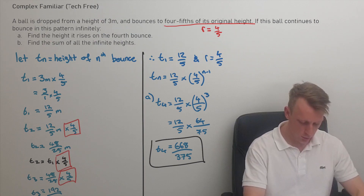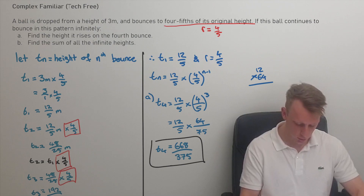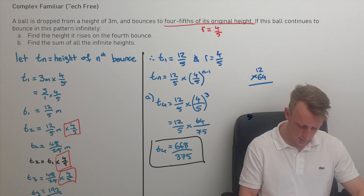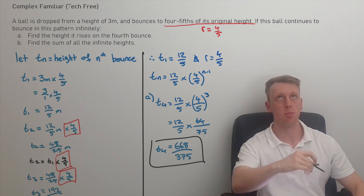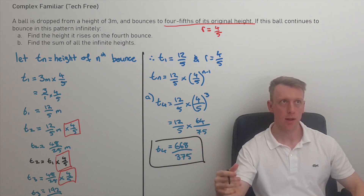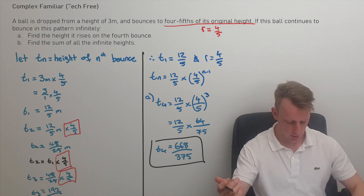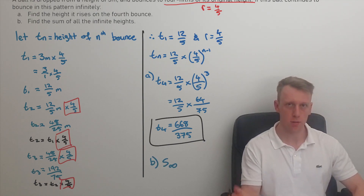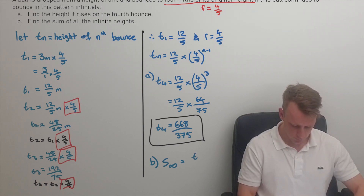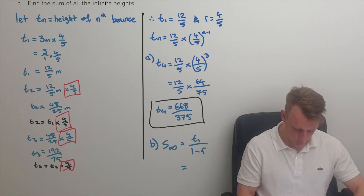Part B asks you to find the sum of all the infinite heights — if this ball bounced forever, what is the total accumulation of all bounce heights? We're dealing with infinity here. The sum to infinity formula is the first term over one minus r, so we plug in and solve.